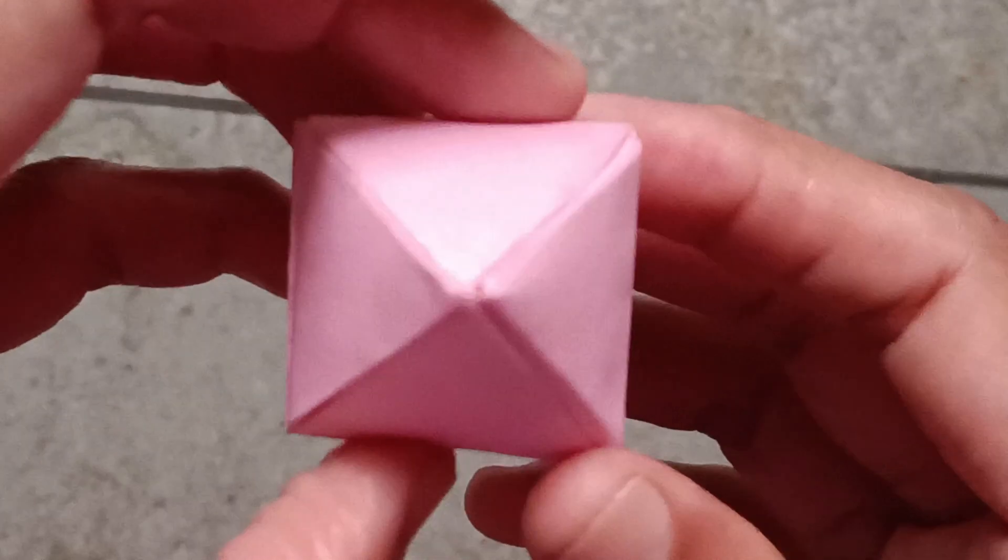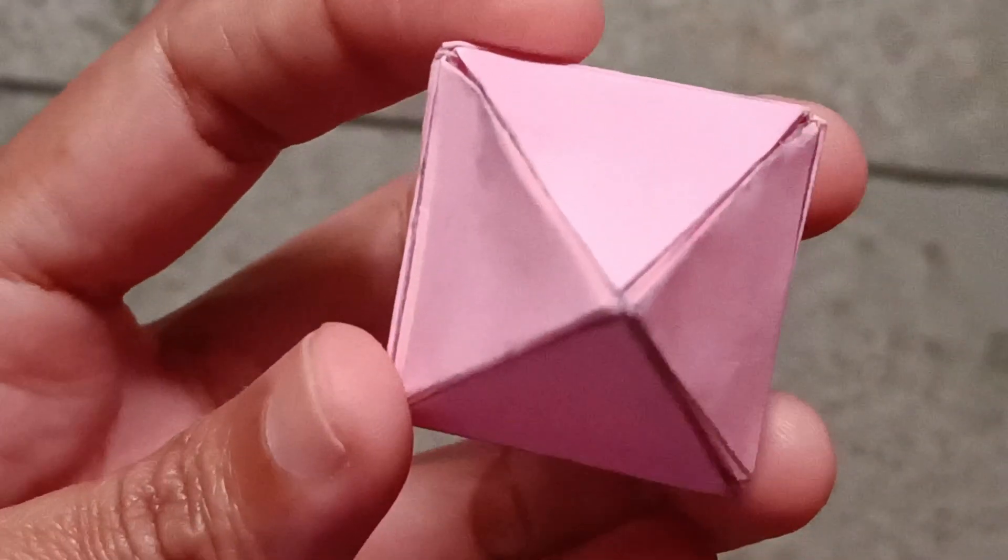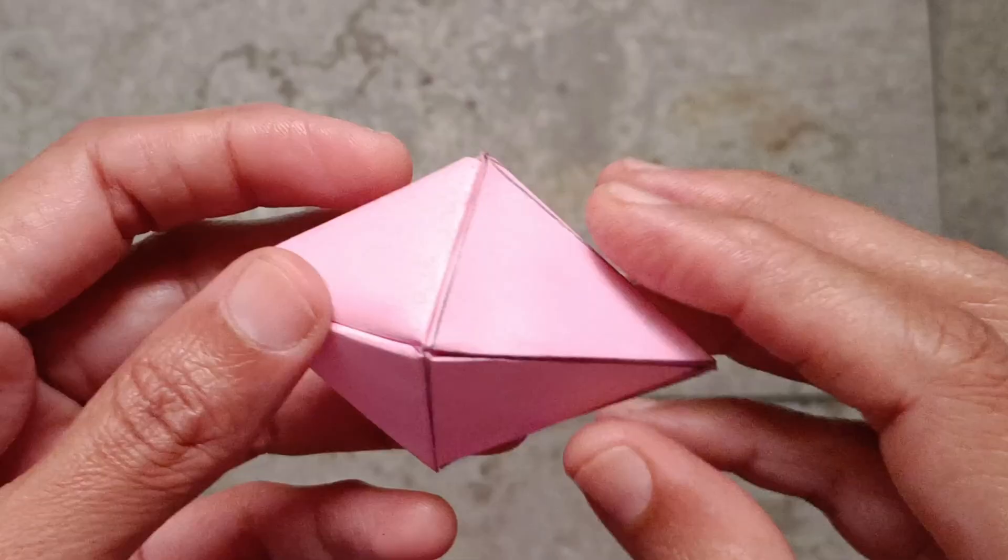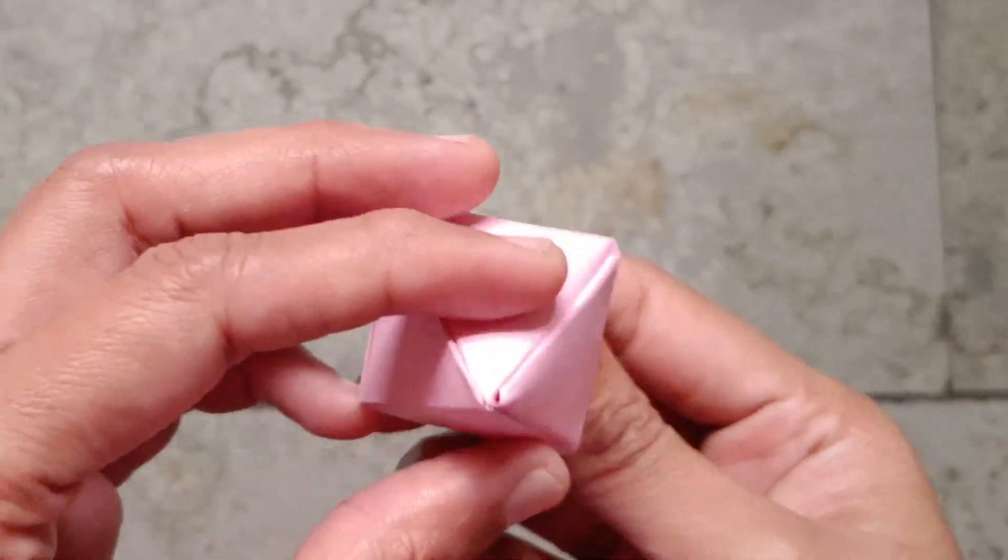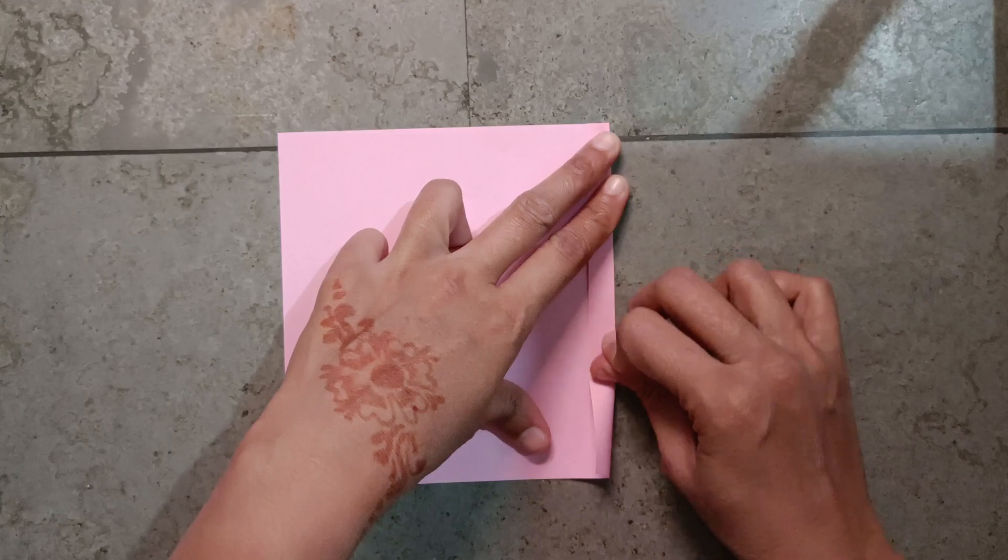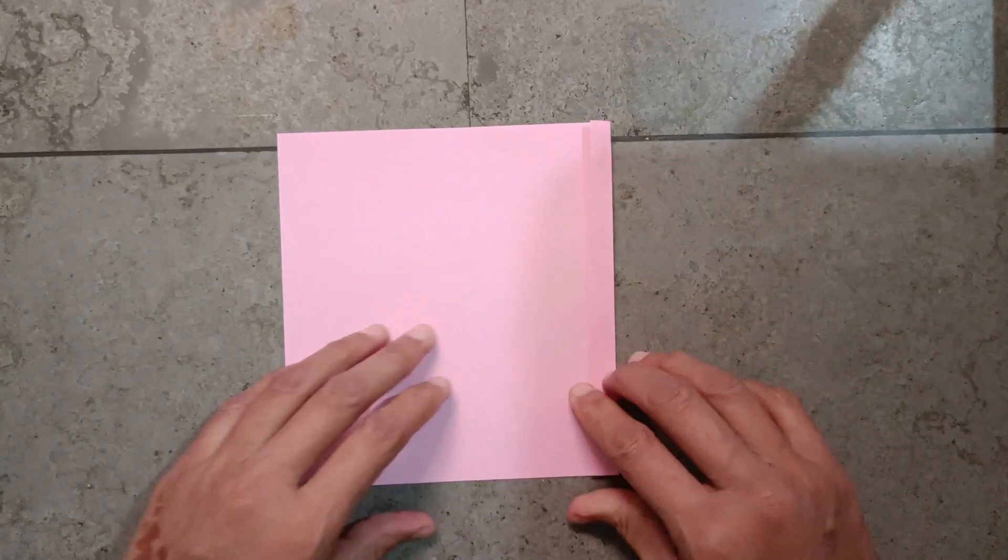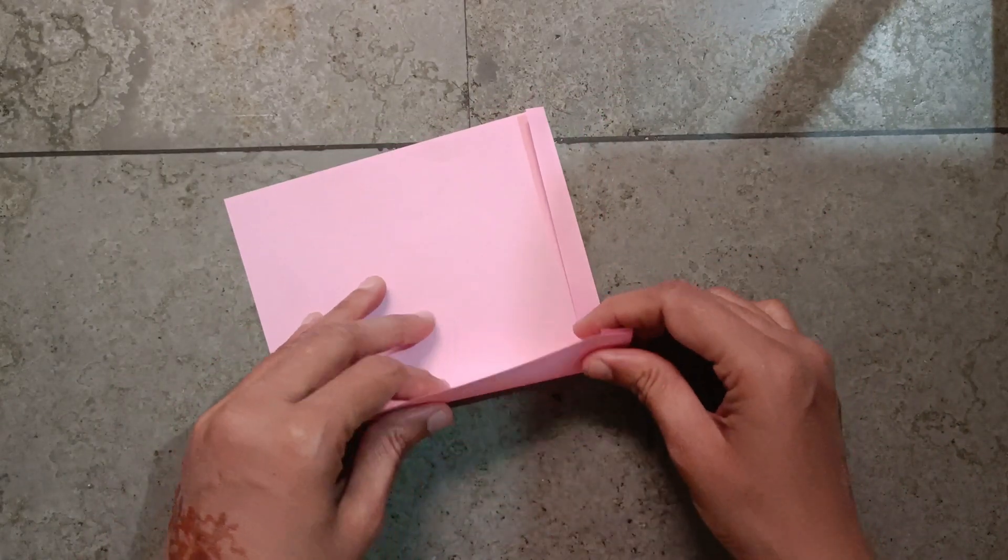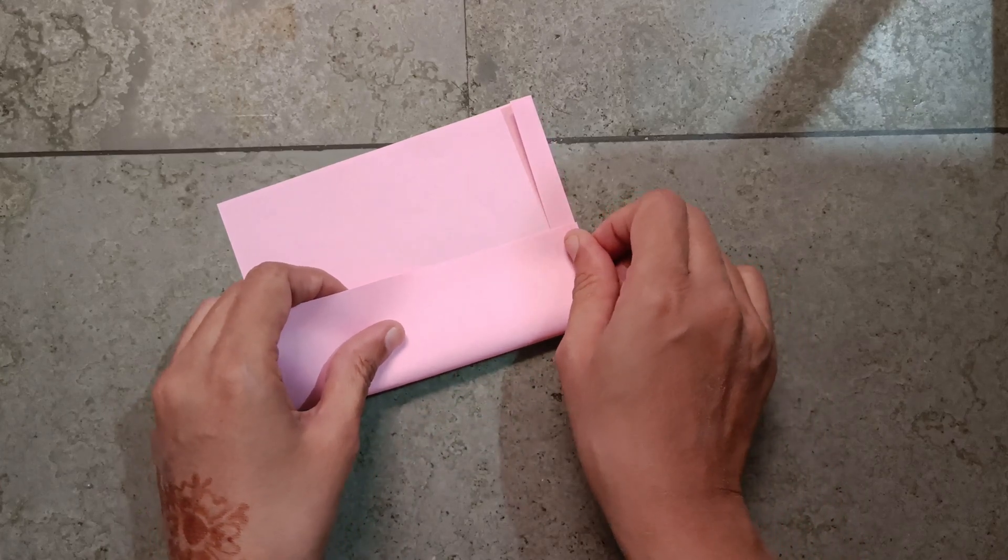Twelve edges of octahedron. Now see how to make an octahedron. Take square shaped paper and fold from the right side. Fold from here too, like this.